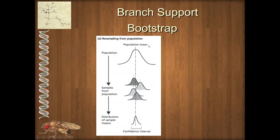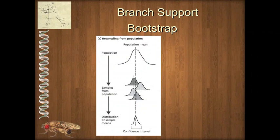The key to a bootstrap analysis is it's sampling with replacement, meaning you randomly sample one character column and make that your first position in a brand new data set, then replace the original back in so there's potential to sample it again, and then randomly pick another character. You build a data set as big as your original, but some characters might be sampled two, three, four, five times, while others may not be sampled at all. If a branch is supported by many different characters, you're almost certainly going to get many of those in your pseudo-replicate.